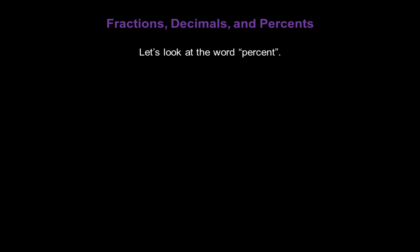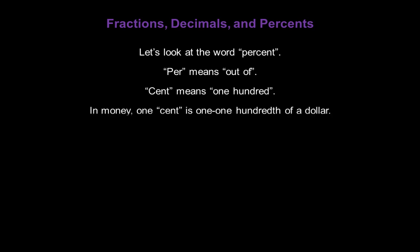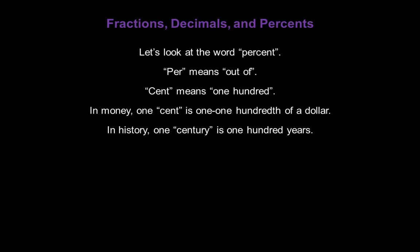Now let's look at the word percent. Per means out of. Cent means 100. In money, we know one cent is one one-hundredth of a dollar. And in history, one century is 100 years. So taken together, per and cent mean out of 100.